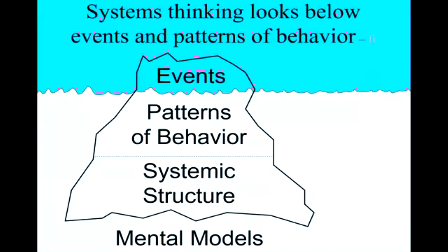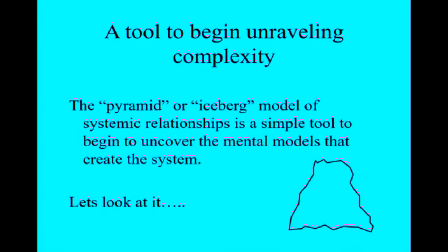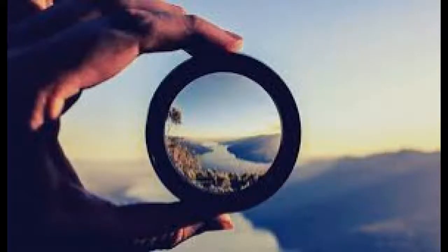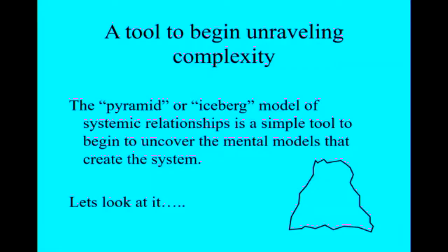And so systems thinking looks at those lower levels, at those patterns of behaviors and systemic structures and mental models, which I'm going to describe very briefly to you. The pyramid is a simple tool that I look at as a lens. It doesn't tell you what to do, but it tells you a little bit more about why things are happening the way they're happening.